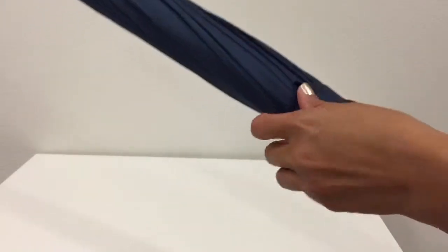It has an EVA foam here in the handle so it has nice grip, it doesn't slip. And I like the fiberglass ribs. It has lots of ribs as you can see and these are made of fiberglass, and also the...